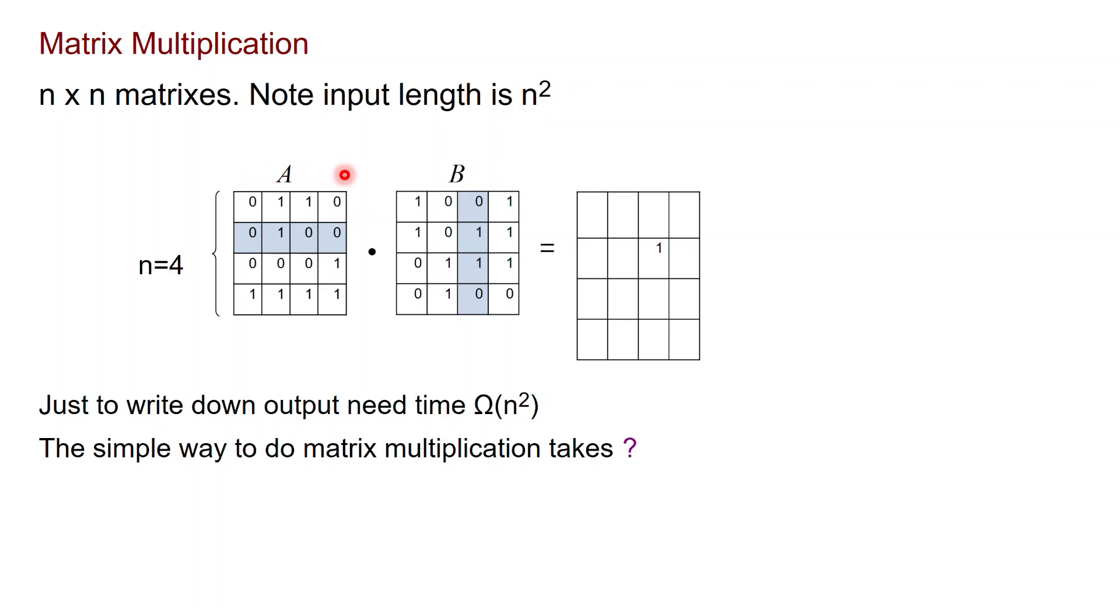As we should all know, each entry of the product matrix is an inner product of a row of A with a column of B. So you multiply 0 times 0, then you do plus 1 times 1, plus 0 times 1, plus 0 times 0. If you wrote this you get a 1 and you write it here. Every entry is computed like this.